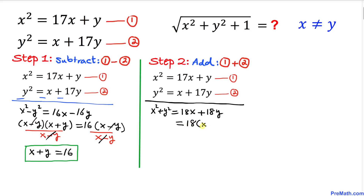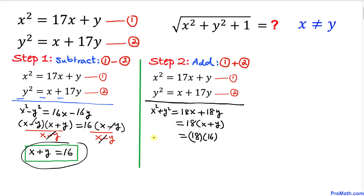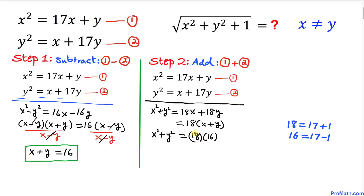We can factor out 18 on the right-hand side, giving 18(x + y). Since we know x + y = 16, we substitute to get x² + y² = 18 × 16.